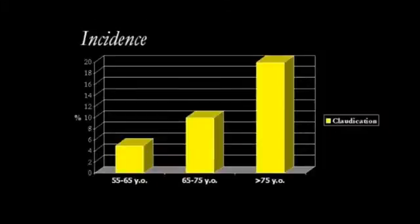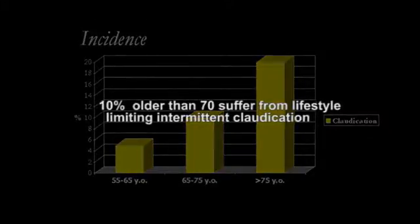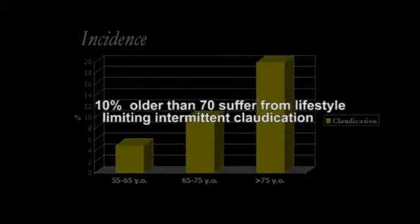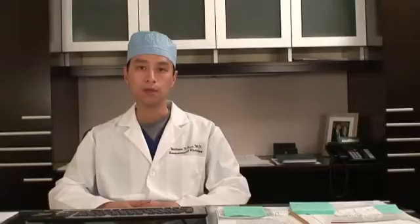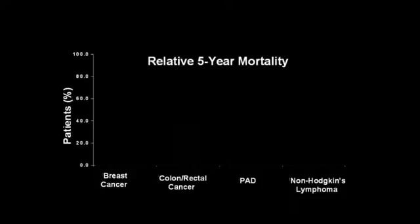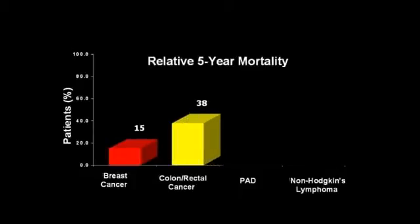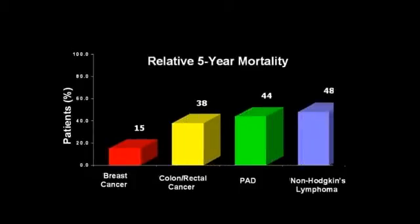The disease will tend to get worse as a patient ages. In fact, 10 percent of those older than 70 years old will suffer from lifestyle-limiting claudication, meaning they will have symptoms of pain with walking. The mortality can be relatively high over a five-year period, and compared to other more common forms of cancer, the mortality from PAD can reach up to 44 percent in some patients.